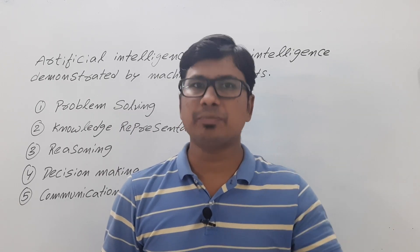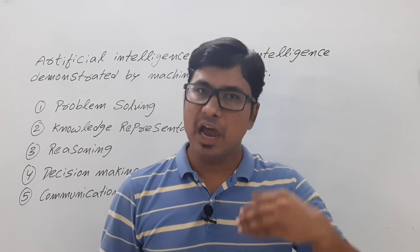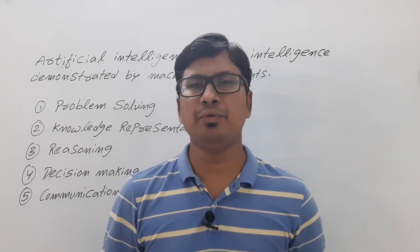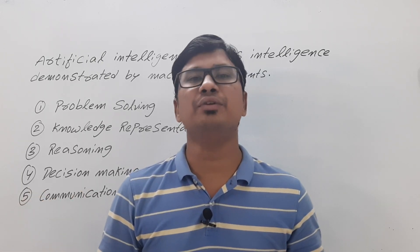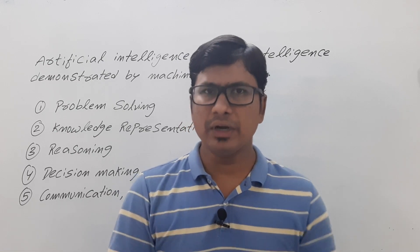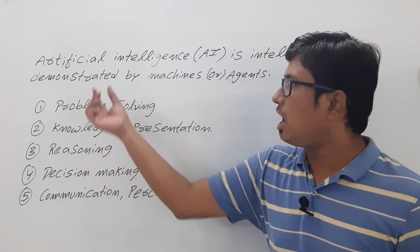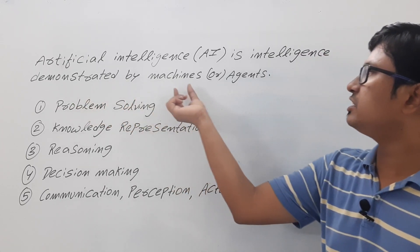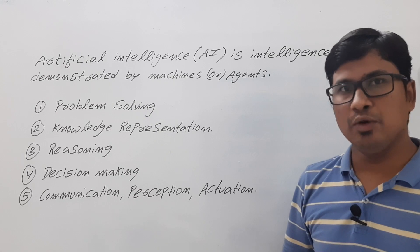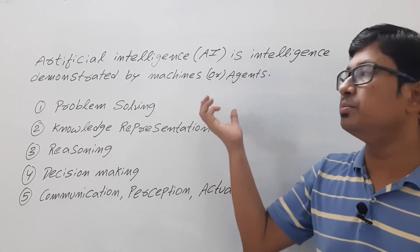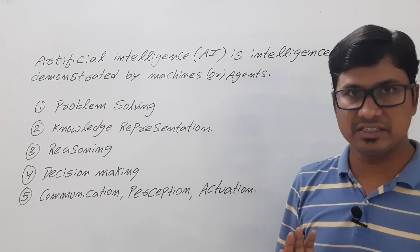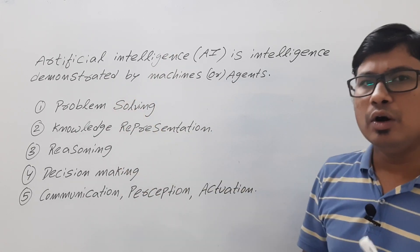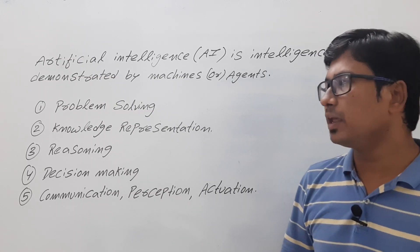Before discussing those relationships, let me first discuss what is artificial intelligence and what are the tasks involved in it. The standard definition of artificial intelligence is: it is an intelligence demonstrated by machines or agents. We want to build an agent which demonstrates intelligence. This is the standard definition, but does this definition tell us everything? No.